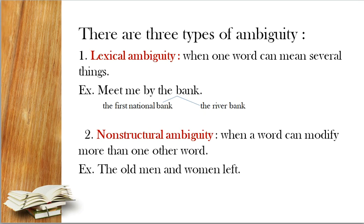There are three types of ambiguity. هناك ثلاث أنواع من الغموض. One: lexical ambiguity — when one word can mean several things. الغموض المعجمي، عندما كلمة واحدة لها أكثر من معنى. مثال: 'Meet me by the bank.' كلمة 'bank' لها أكثر من معنى: إما البنك (المصرف) أو the river bank (ضفة النهر). وهناك غموض — ما المقصود بـ 'the bank' هنا؟